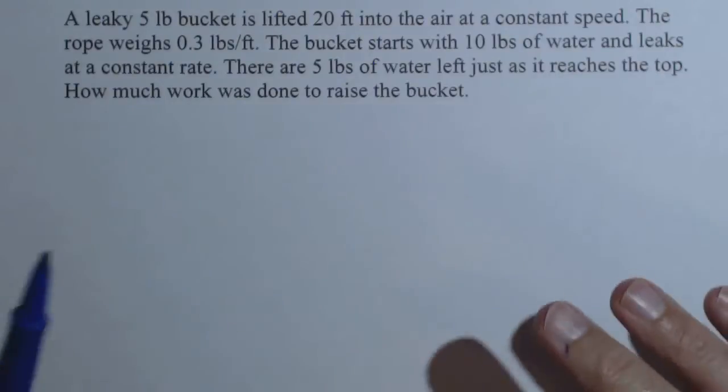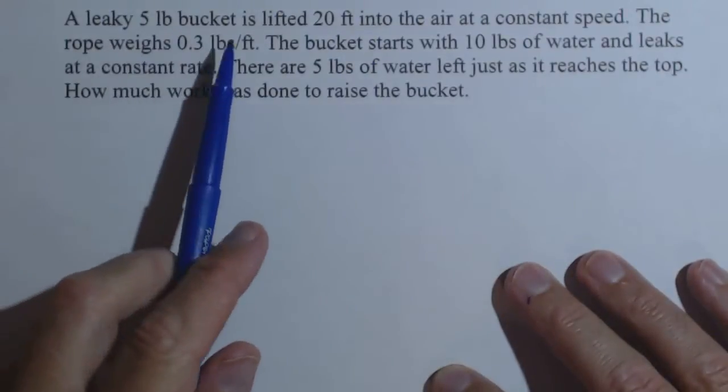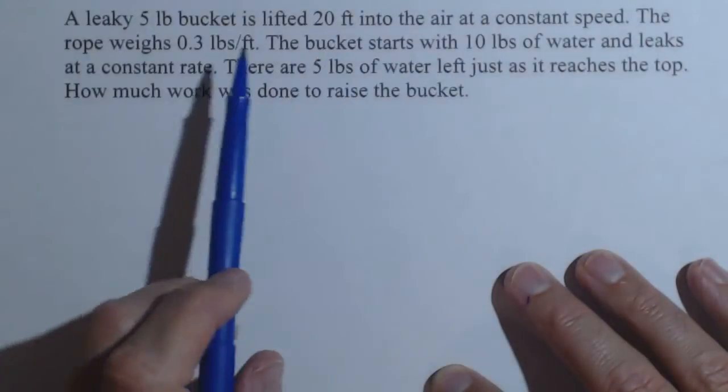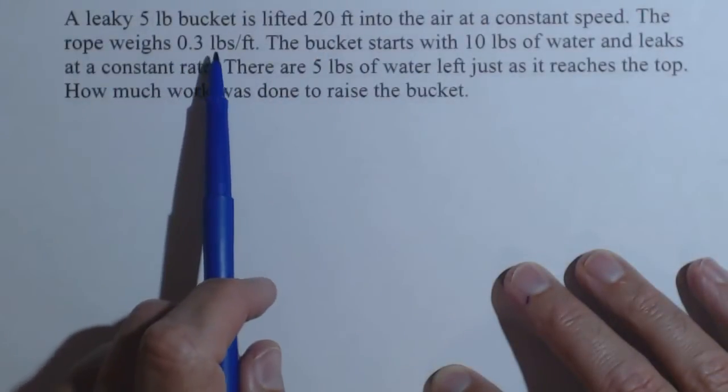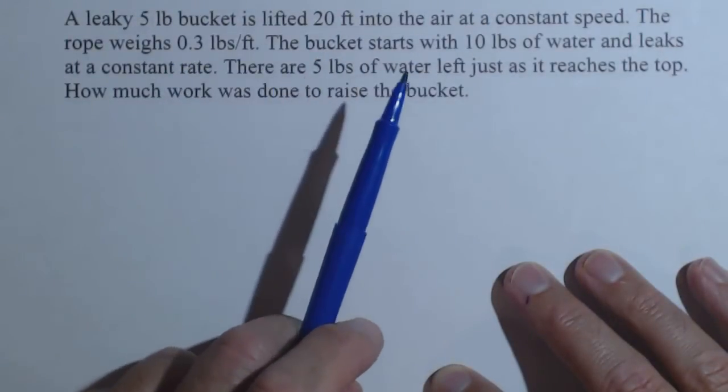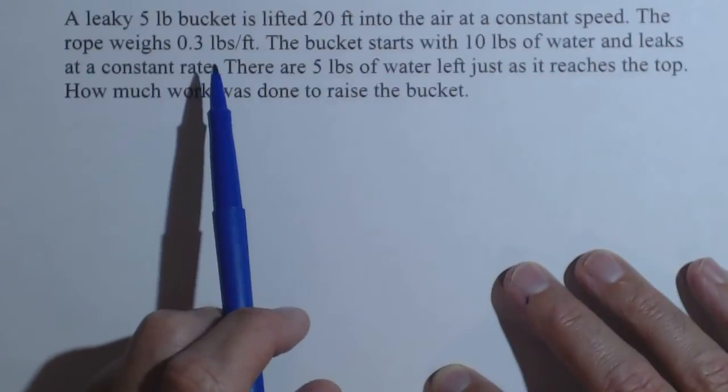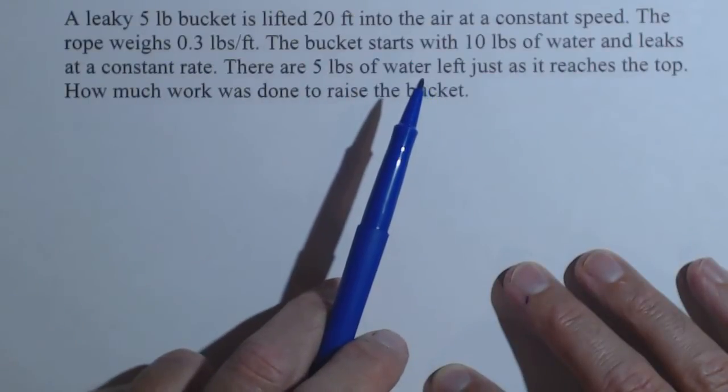We're going to calculate the work to raise a leaky 5 pound bucket that's lifted 20 feet in the air at a constant speed. The rope weighs 0.3 pounds per foot, the bucket starts with 10 pounds of water, leaks at a constant rate, and there's only 5 pounds left when we get to the top.